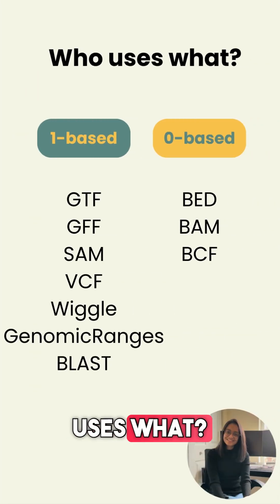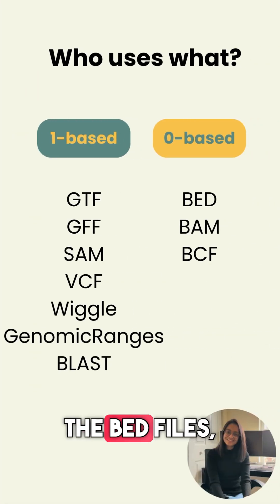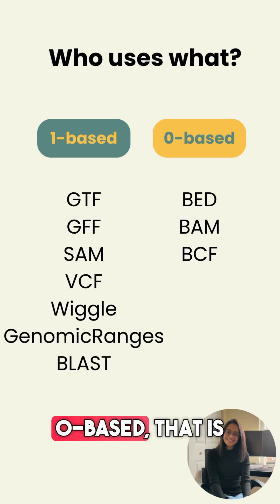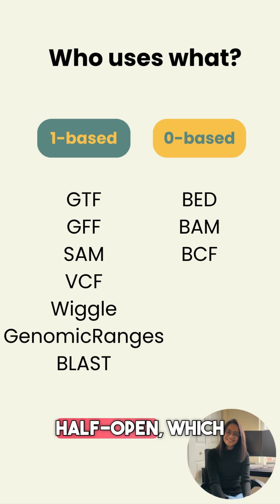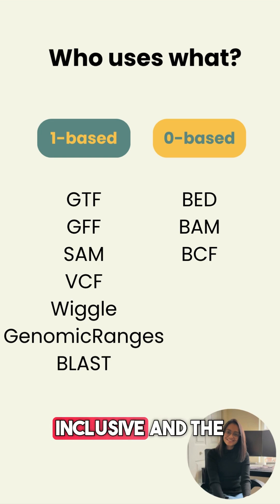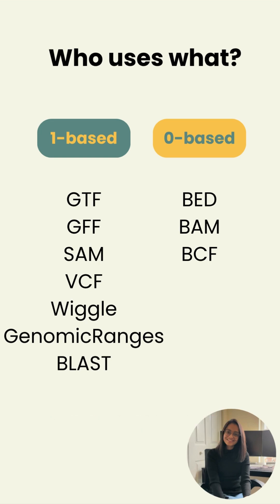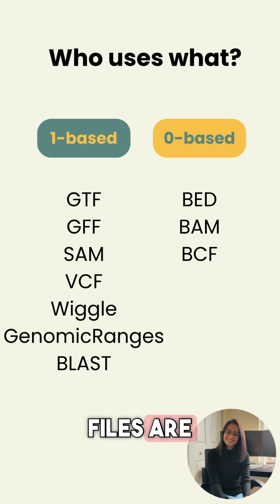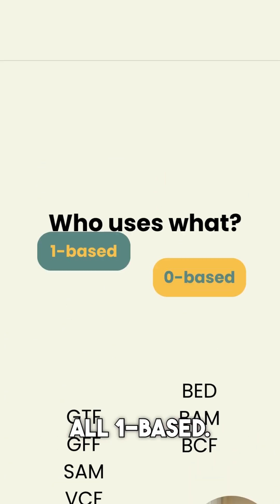So who uses what? The BED files, BAM files, and BED files are all zero-based — i.e., half-open — which means the start is inclusive and the end is exclusive. Whereas the VCF, GTF, GFF, and SAM files are all one-based.